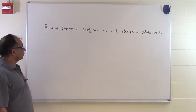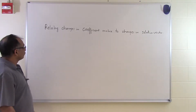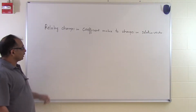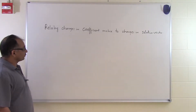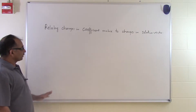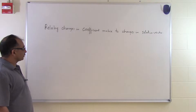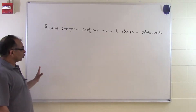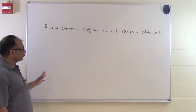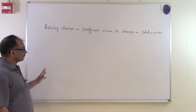In this segment we'll talk about how if you make certain changes in the coefficient matrix, how they are related to the change in the solution vector. We're going to do this through the norms of the matrices involved. We're not going to show the proof of the theorem, but we are going to talk about what it means.